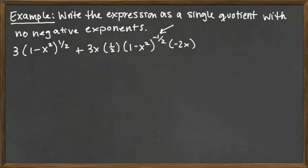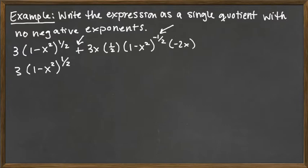Looking at the expression, we notice there's a plus sign, so we have two terms in a sum — the term before the plus sign and the term after it. The term before the plus sign is relatively clean: 3 times 1 minus x squared to the positive 1 half exponent. But what comes after the plus sign is rather messy, involving 1 minus x squared raised to the negative 1 half power.